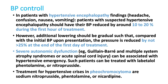In hypertensive crisis due to pheochromocytoma, the patient can have very high BP. We cannot routinely give beta blockers, because beta blockers will block the beta receptors and unopposed alpha action can produce further exacerbation of BP. So never give beta blockers as first-line therapy in pheochromocytoma. You can try sodium nitroprusside or phentolamine, which is an alpha blocker.